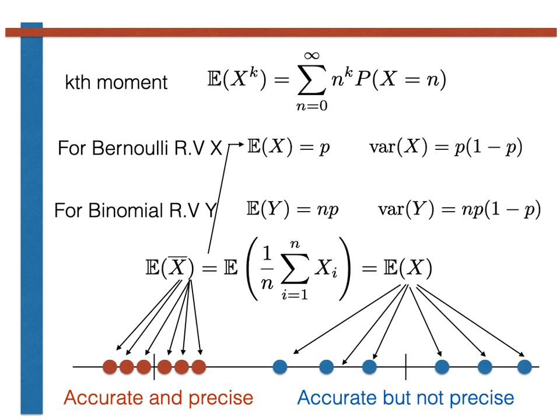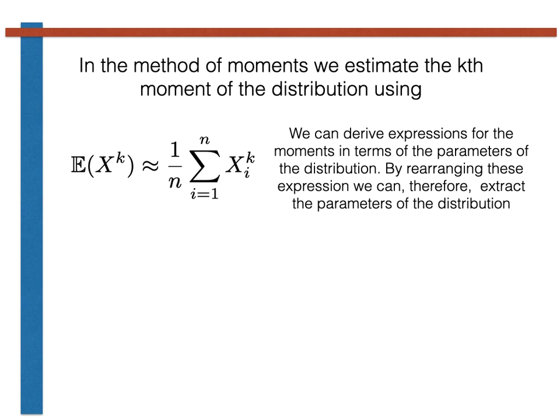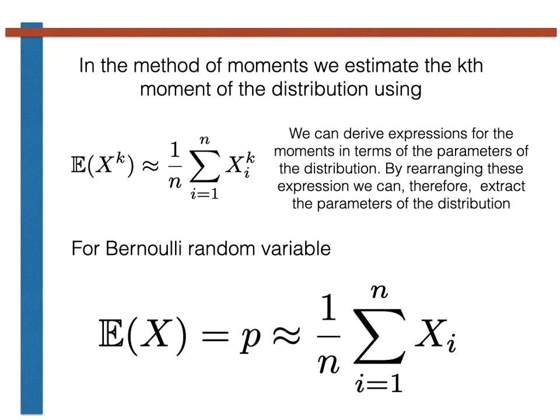To summarise, in the method of moments we estimate the kth moment of the distribution by using the expression shown here. At the same time, we derive an expression for the kth moment that is a function of the parameters of the distribution. This expression is equated with the estimate obtained by sampling, and the parameters are then found by rearranging the resulting expression. For a Bernoulli random variable this procedure gives a simple result. For other types of random variable the idea is the same but the process is a little more complicated. The quiz and exercises that follow will help you to apply the method in these cases as well. Good luck!